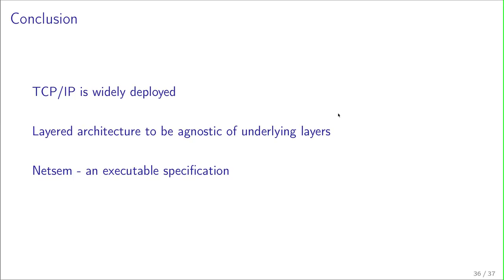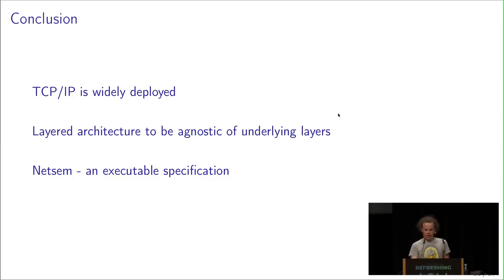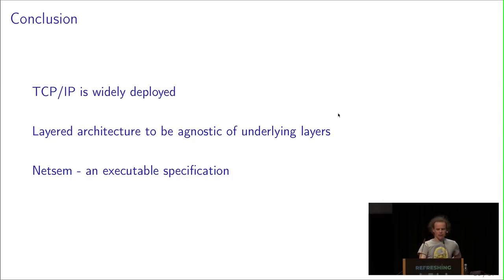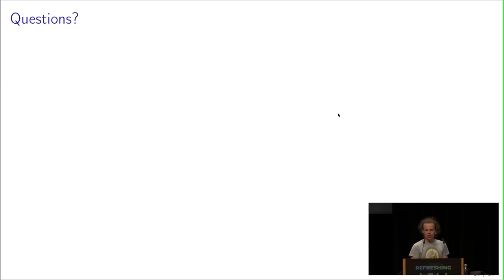Zusammengefasst: TCP wird in sehr vielen Systemen implementiert. Es ist eine Schichtenarchitektur. Die oberen Schichten haben kein Wissen über die Art und Weise der unteren Schichten. Mit Network Semantics kann man das schön prüfen. Vielen Dank und Fragen bitte.